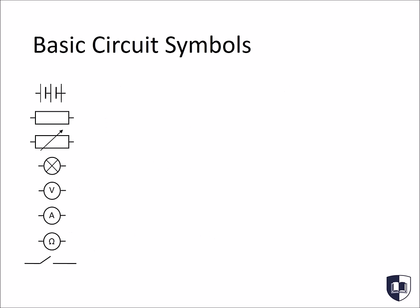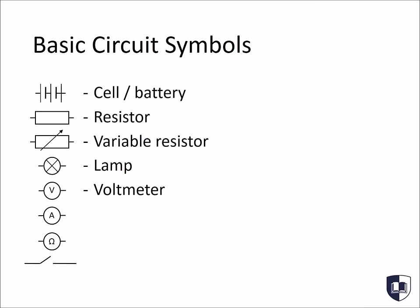Although there are many different symbols used in circuits, you only need to be familiar with the basic ones. Here, we have a summary of the symbols used for cells, resistors, variable resistors, lamps, voltmeters, ammeters, ohmmeters and switches.